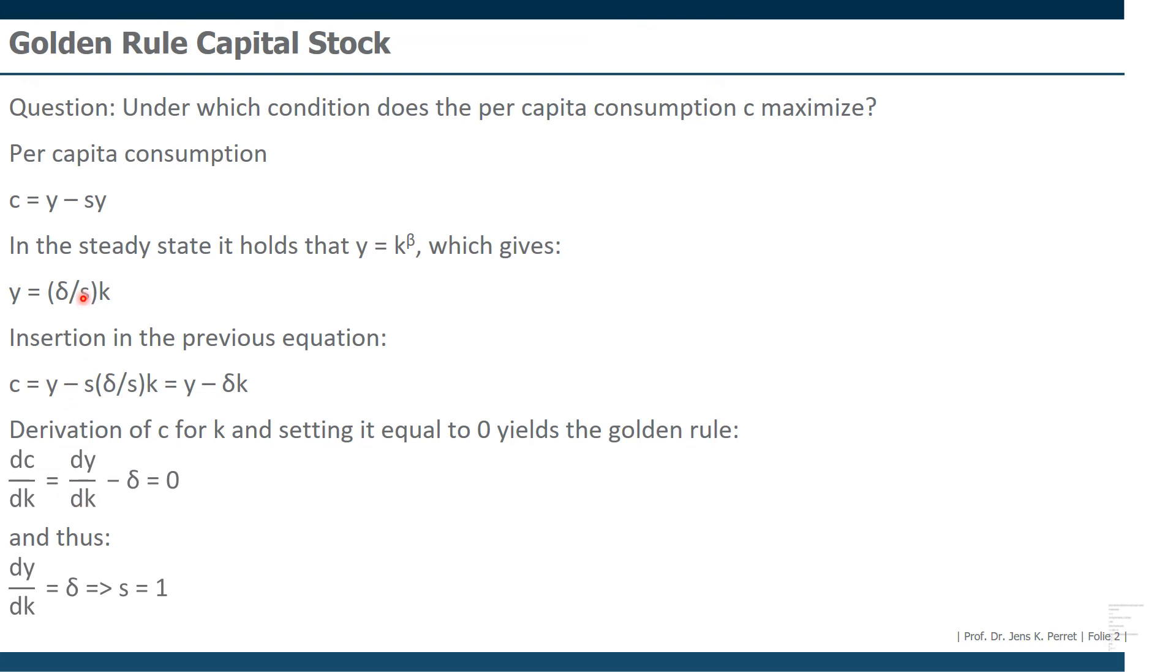if we were to use this formula, this definition of the steady state GDP per capita, as well in the first term, what we will get as a result is a simple result as the savings rate would need to be one, which actually would be really strange because this would mean we would maximize consumption if everything is saved.